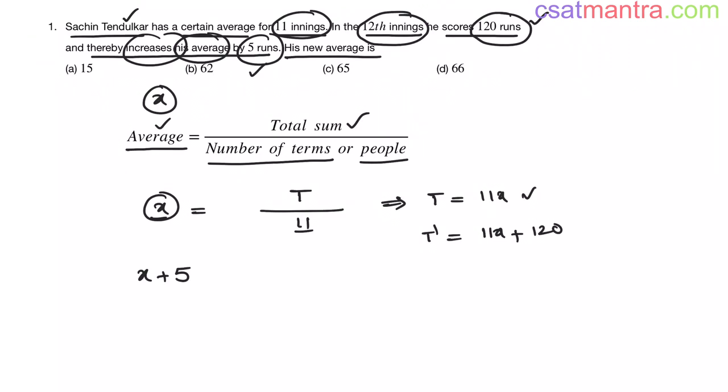Now the new average x plus 5 equals new total sum, that is 11x plus 120, by number of innings, now 12 innings my friends. Now we got an equation: 11x plus 120 equals 12 into x plus 5.